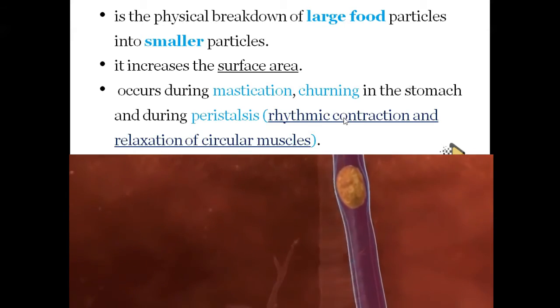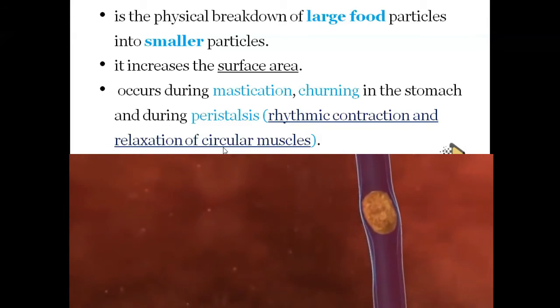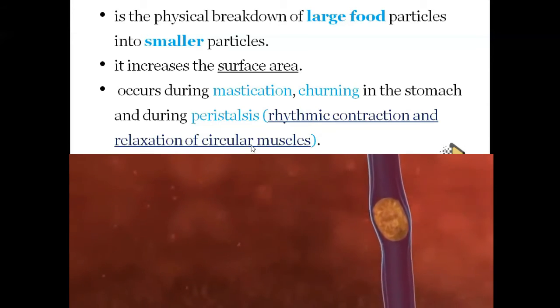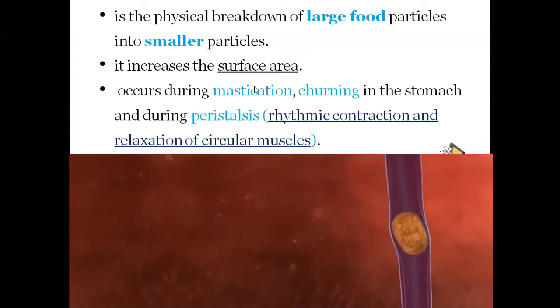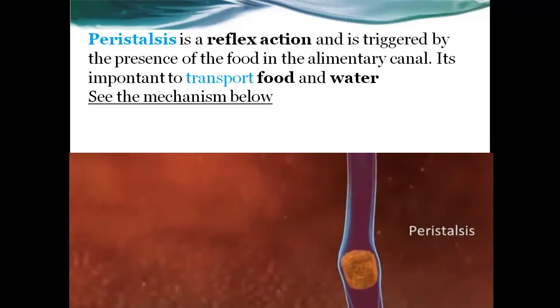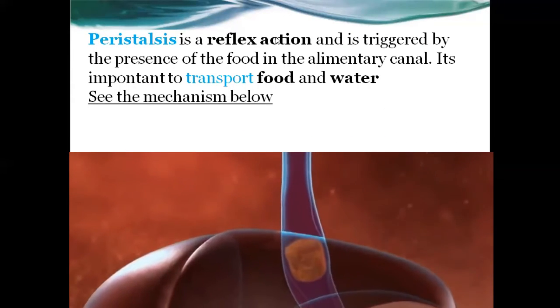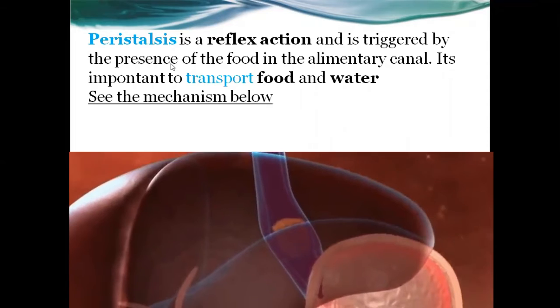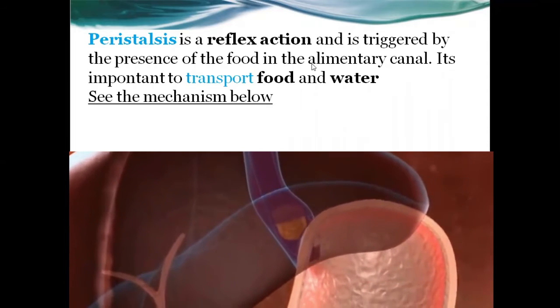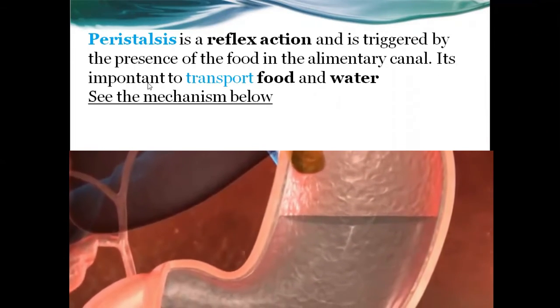Peristalsis is a rhythmic, automatic contraction and relaxation of the circular muscles. The muscles contract and push food downwards. Peristalsis is a reflex action — it means you don't have control over it, and it is triggered by the presence of food in the alimentary canal.